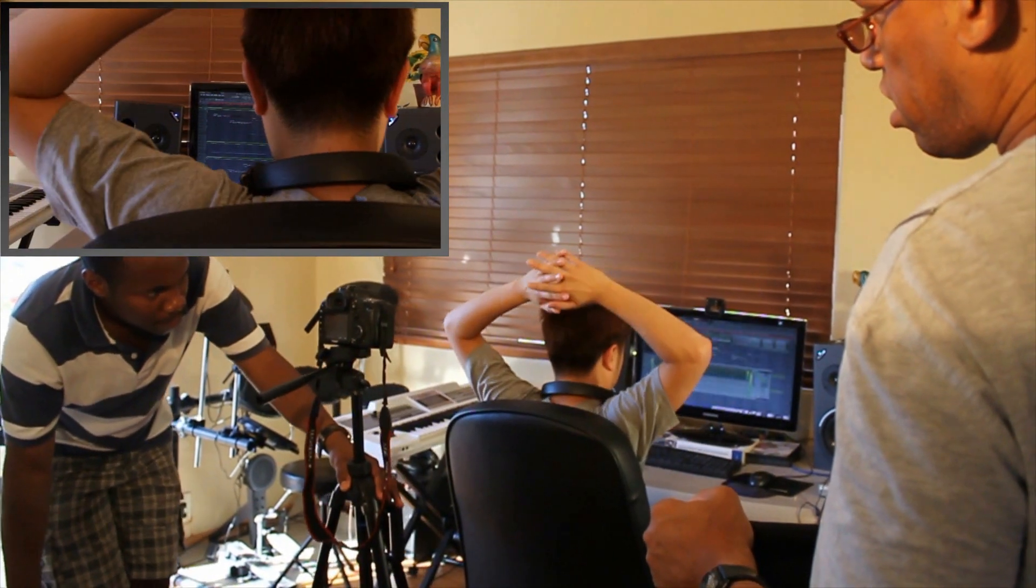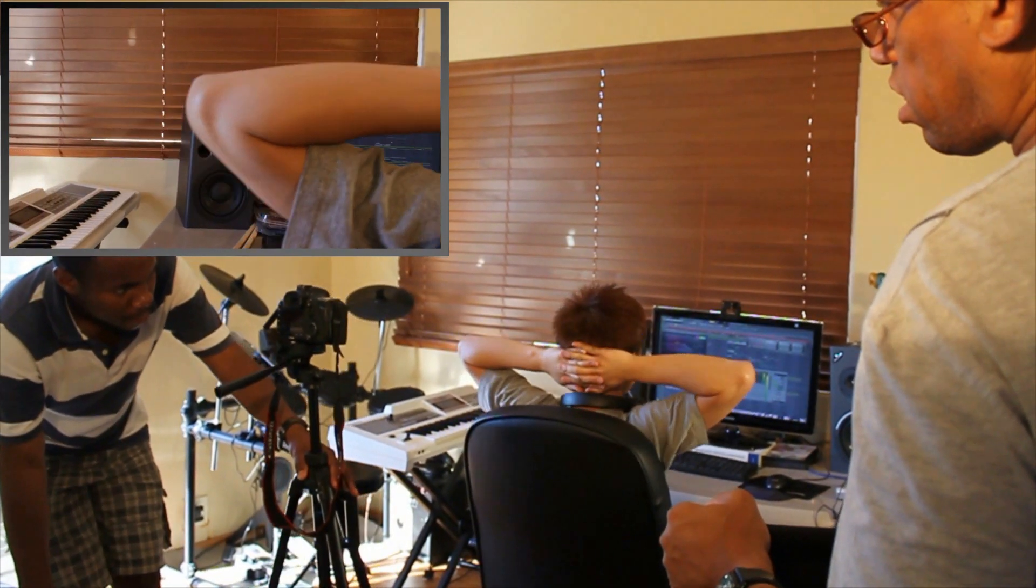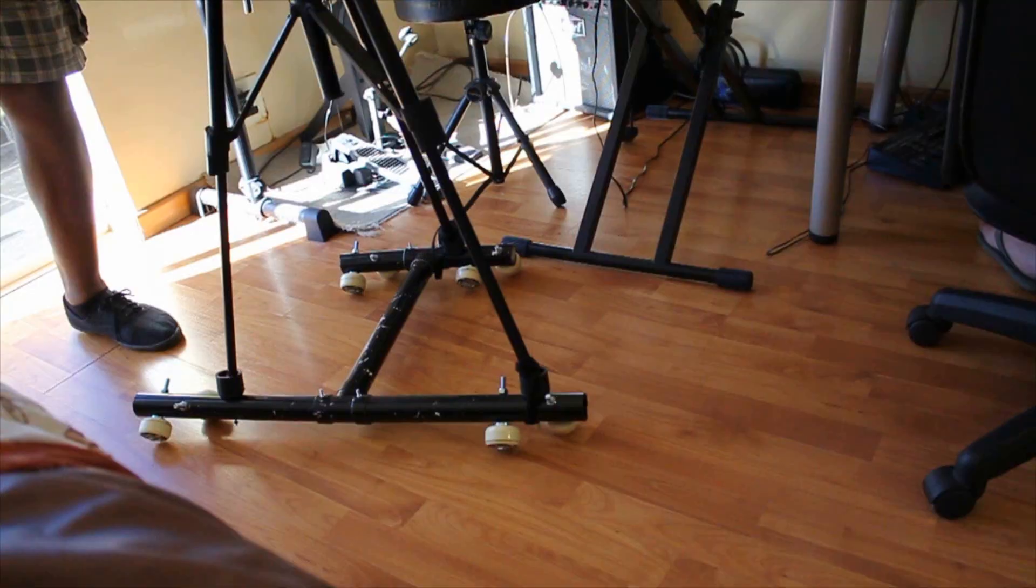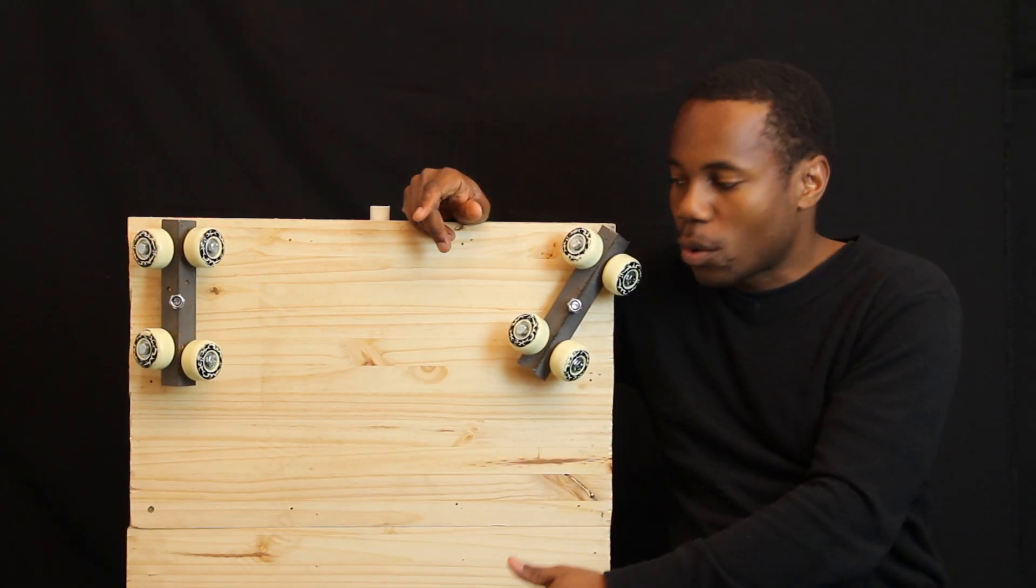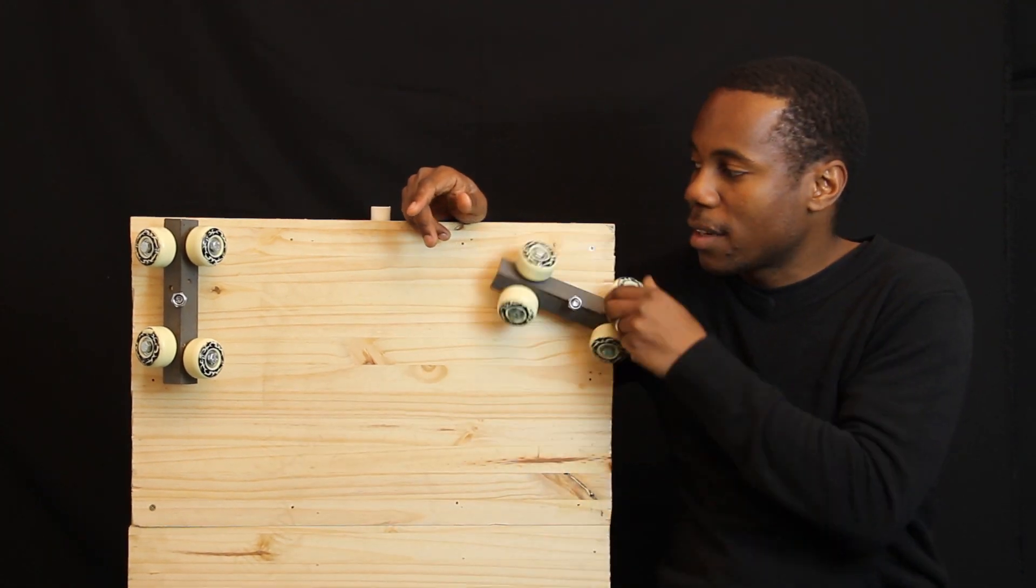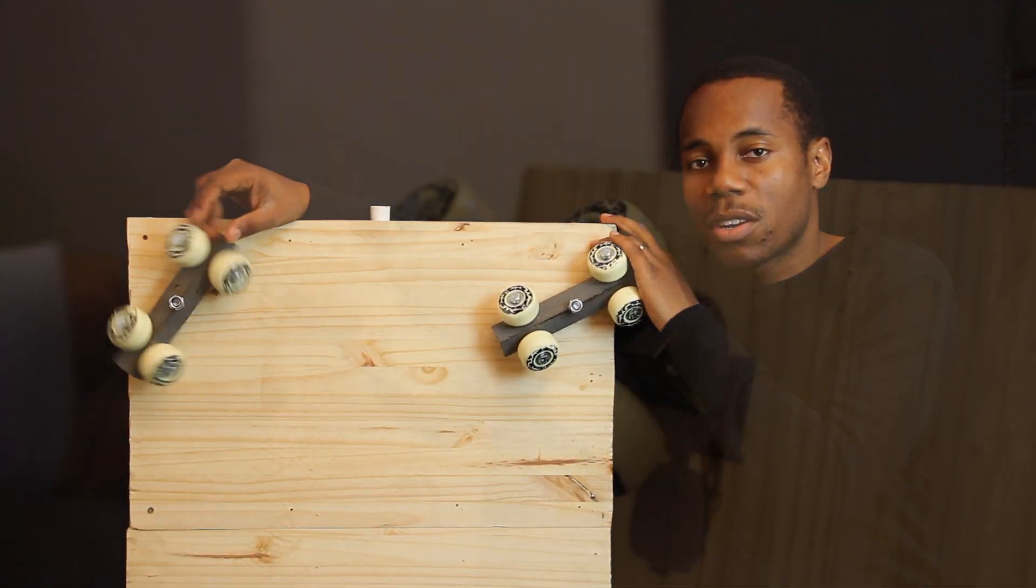My previous dolly could only film in one direction in a straight line, so this one here can actually turn and that's why I went for this design. All four wheels or all four sets of wheels can actually rotate like this, which means I can put it on a curved track and the dolly will just turn while I'm filming.